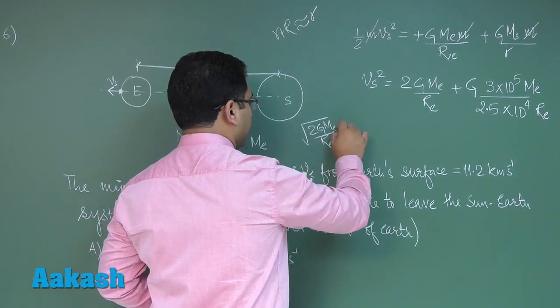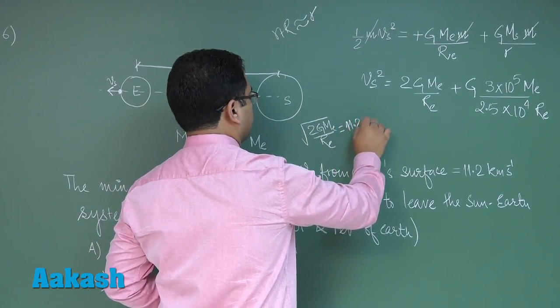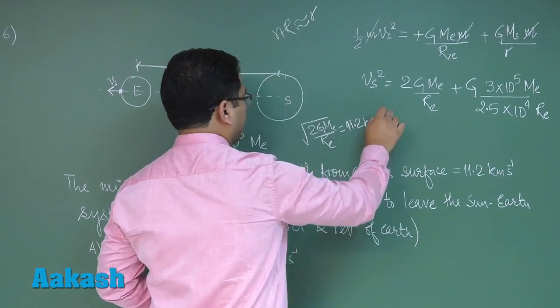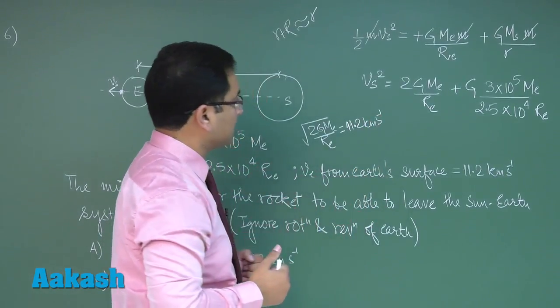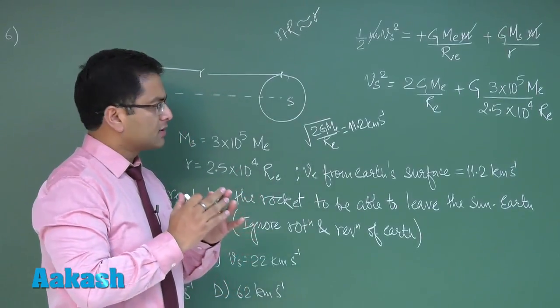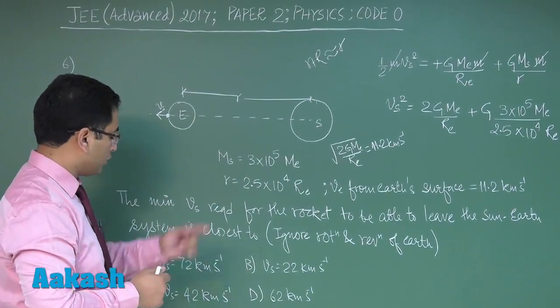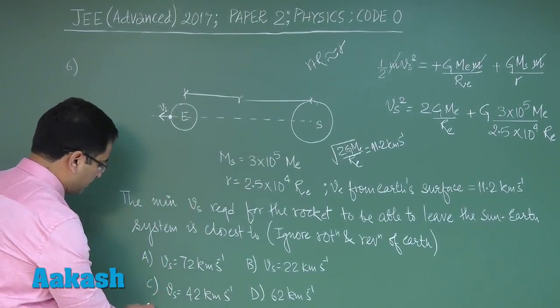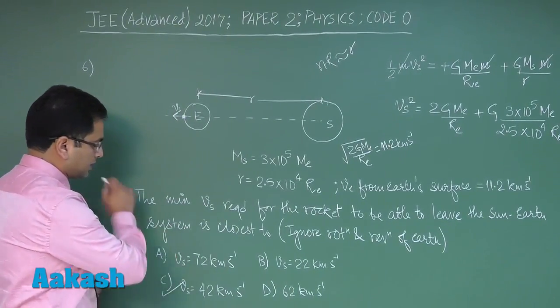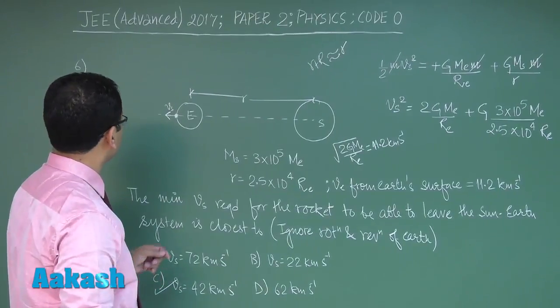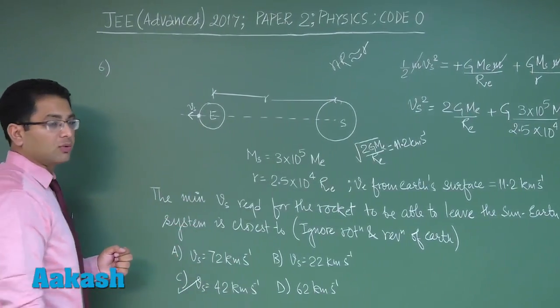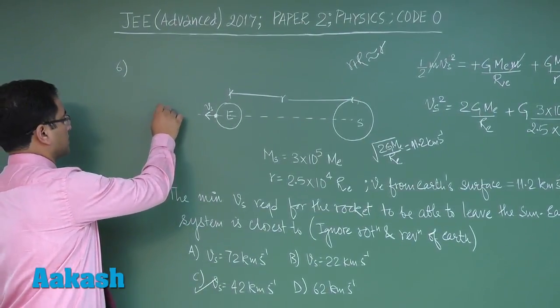Look at the calculation ease that has been given. When we solve this, there is no difficulty level - straightforward calculation. When we calculate, the answer will be very close to 42 km per second. So the correct option for question number 6 would be option C.